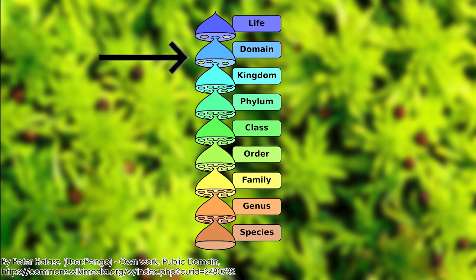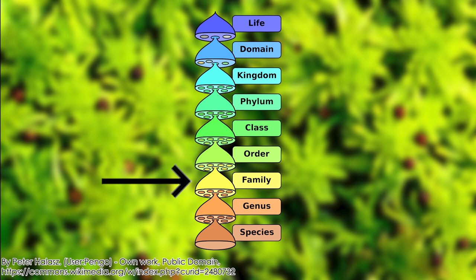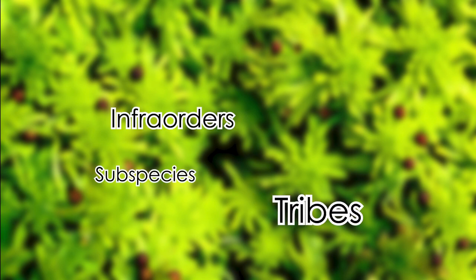In this system, the biggest and topmost groups are the domains, which contain kingdoms, which contain phyla (plural of phylum), which contain classes, which contain orders, which contain families, which contain genera (plural of genus), which contain species. Sometimes you'll see things like infra-orders, tribes, subspecies and super-whatevers. I'm not going to be covering these as it's generally the same concept, just with even more specificity.